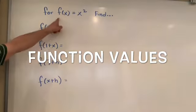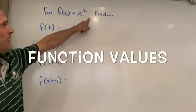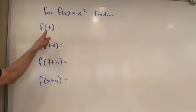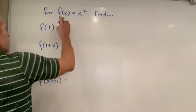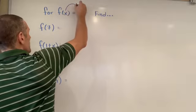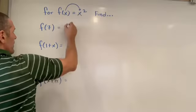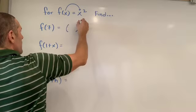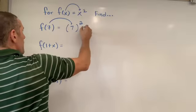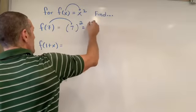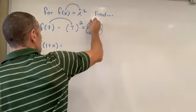If we are given a function like f of x equals x squared, and we're asked to find the function values when our input is 7, notice what our rule says. Our rule says take your input and square it. So in this case, our input is 7, so that's what becomes squared to give us 49 as an answer to this first one.